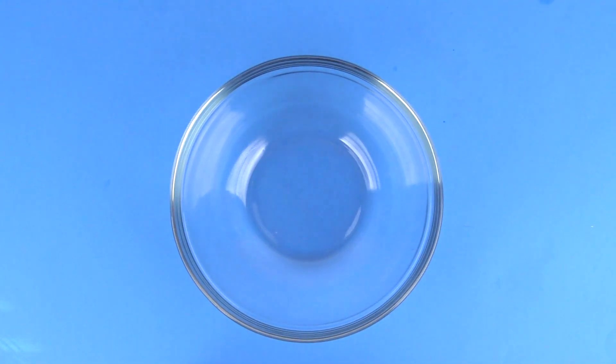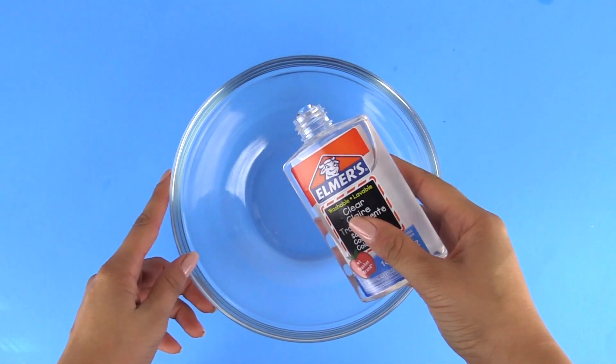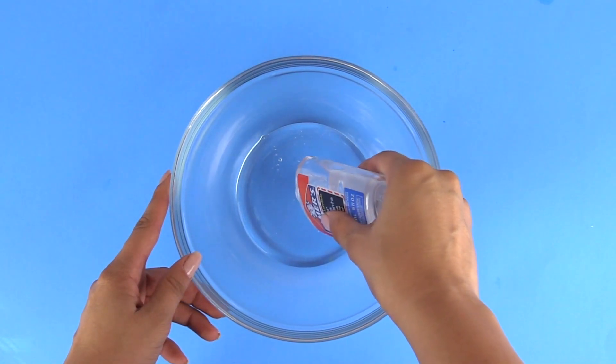So we're going to be having a bowl right here and we're going to first pour in four ounces of Elmer's glue. Now you could use either clear or white glue.